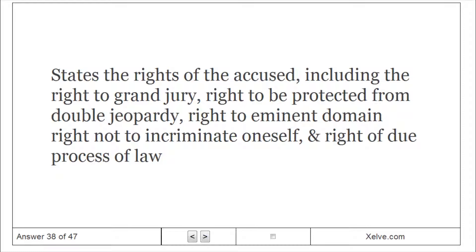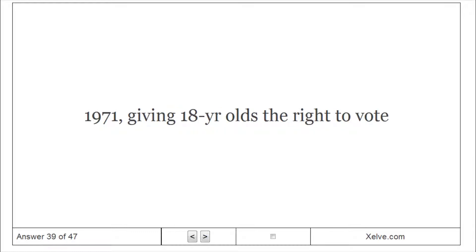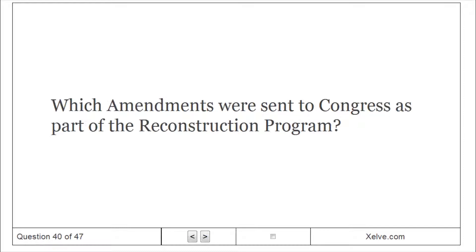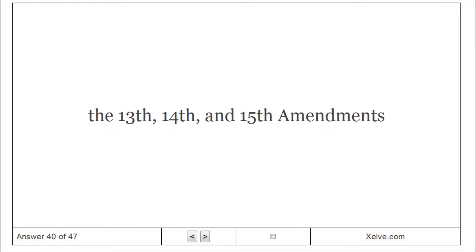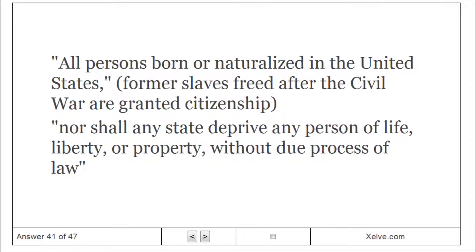The Twenty-Sixth Amendment, ratified in 1971, gave eighteen-year-olds the right to vote. The Thirteenth, Fourteenth, and Fifteenth Amendments were sent to Congress as part of the Reconstruction program. The major provisions of the Fourteenth Amendment state that all persons born or naturalized in the United States are citizens, and that no state shall deprive any person of life, liberty, or property without due process of law.